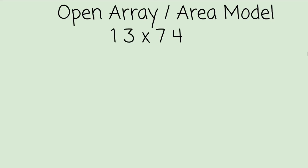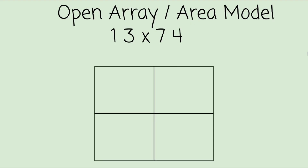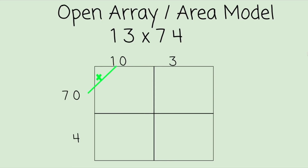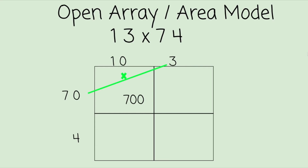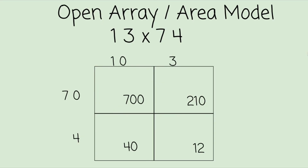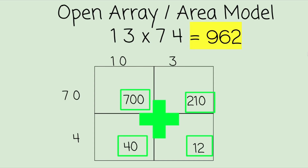Next we're going to talk about how to use an open array. We've got 13 times 74. They're both 2-digit numbers, so we have 2 columns and 2 rows. This 1 represents 10, that 3 is 3, this 7 represents 70, and that 4 is just 4. Now it's time to multiply: 70 times 10 — think of this as 7 times 1 which is 7, then add 2 zeros. 70 times 3: 7 times 3 is 21, add that 0. 4 times 10 is 40. 4 times 3 is 12. Add them all up for a final product of 962.